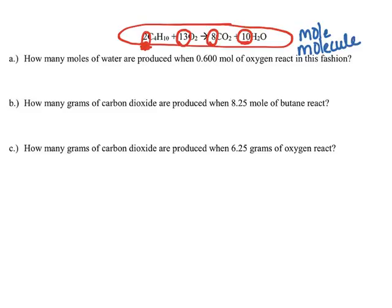So I could say that for every two molecules of C4H10, 13 molecules of O2 would react, and I'd get 8 molecules of carbon dioxide and 10 molecules of H2O. On a larger scale, these represent mole ratios. To use these coefficients, I have to either be in molecules, or more likely in the problem, I have to be in moles. I will use these coefficients any time I want to go from one substance into a completely different substance.